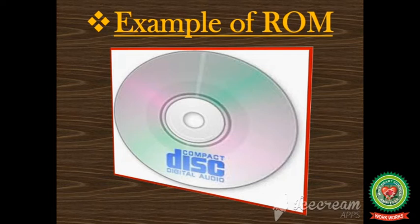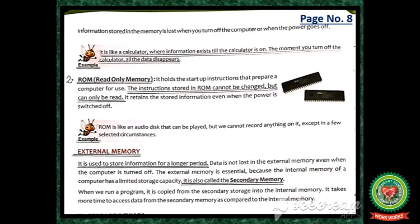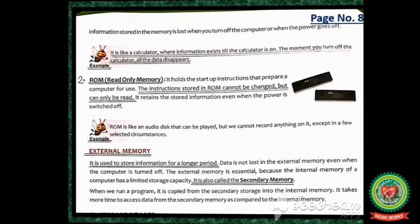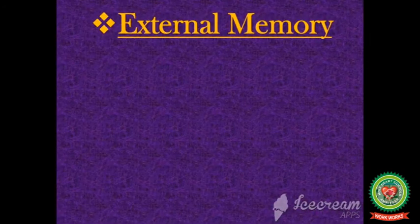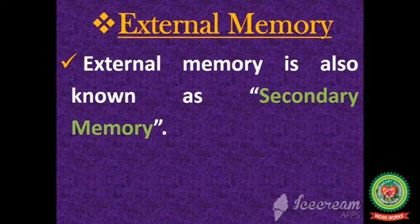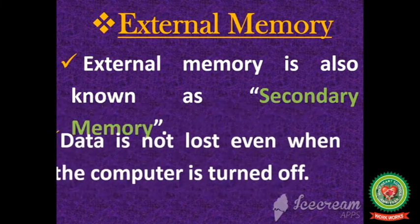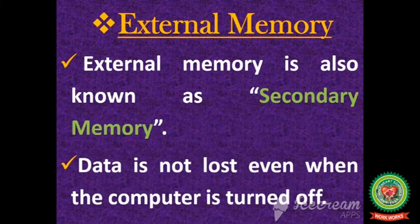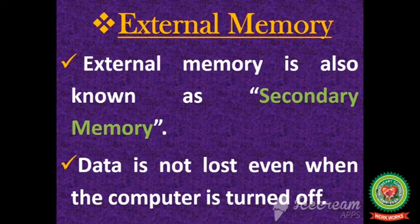Our next topic on page number eight is external memory. External memory is also known as secondary memory. It is used to store information for a longer period, and the main advantage is that the data is not lost even when the computer is turned off.